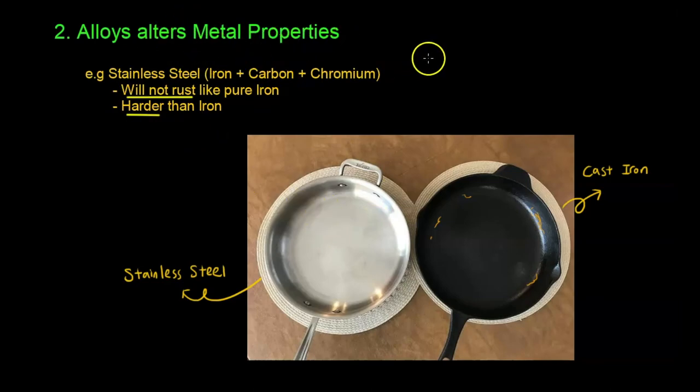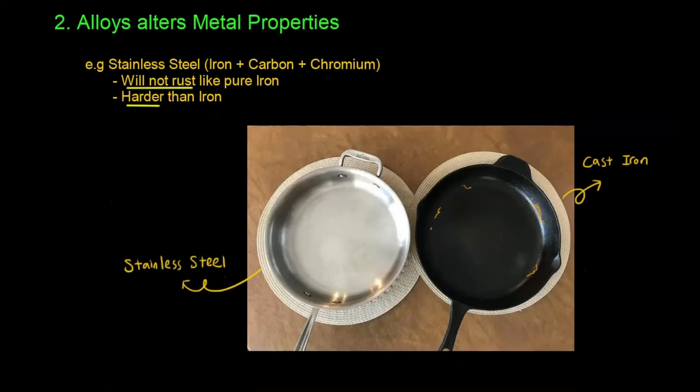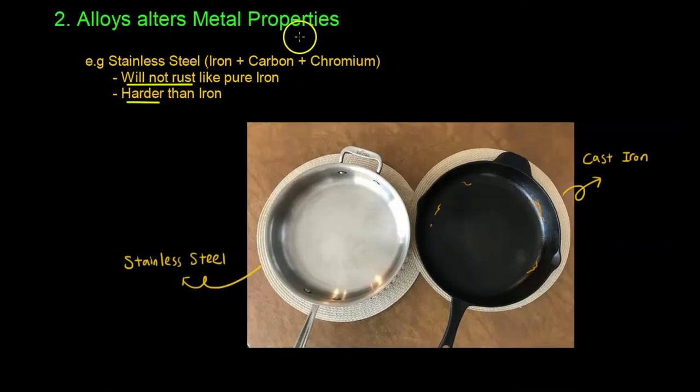So these are the two ways alloys are useful to us. First is that it makes metal stronger. Secondly, it alters the metal properties—in the case of stainless steel it makes it rust proof. And that's all for alloys.